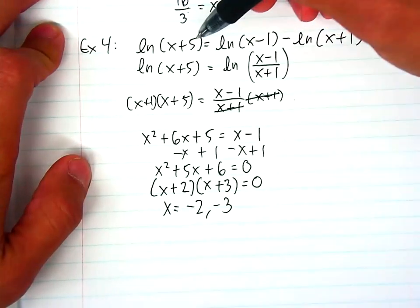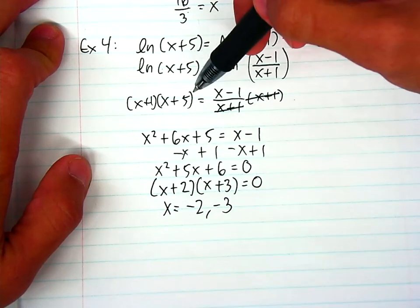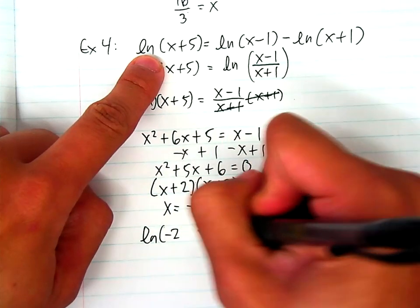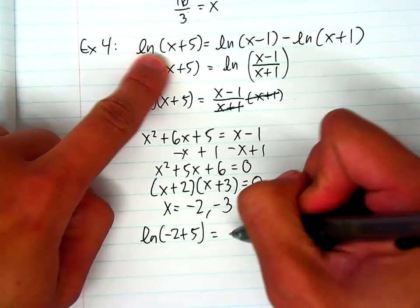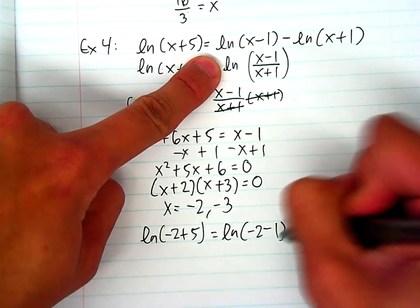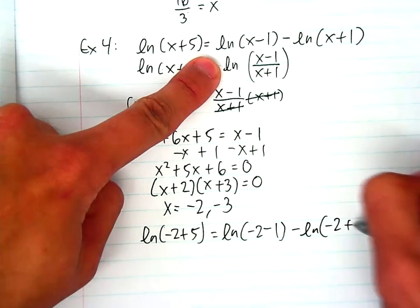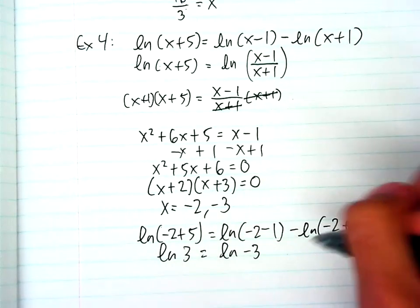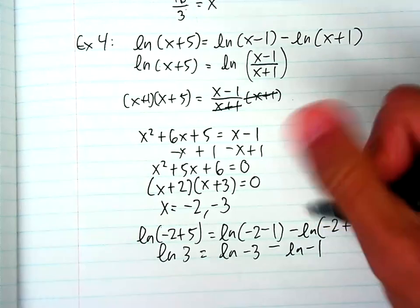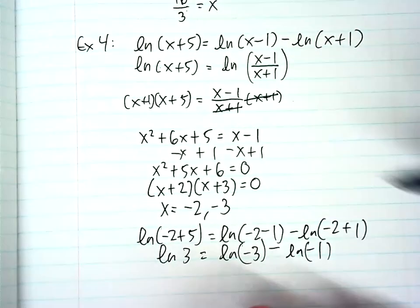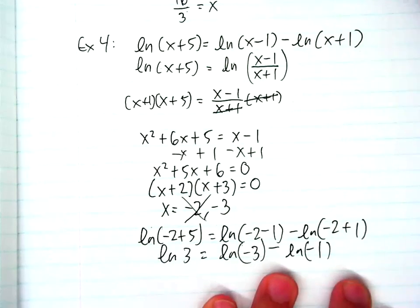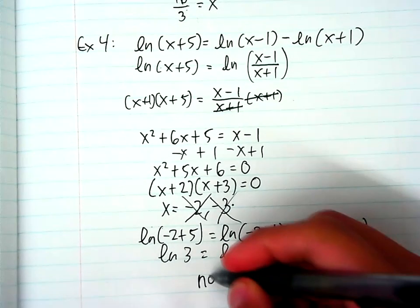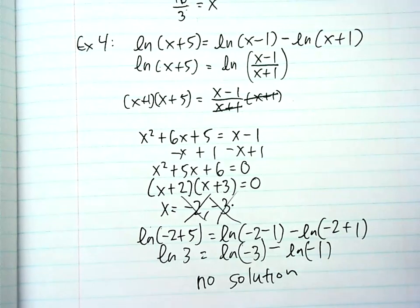And again, I still want to plug it in just into the original equation to make sure that I don't get any extraneous solutions. So if I plug in negative 2 in here, I will get the natural log of negative 2 plus 5 equals the natural log of negative 2 minus 1 minus the natural log of negative 2 plus 1. So if you look, I'm taking the natural log of negative numbers, so negative 2 is actually extraneous. And you'll notice if I plug in negative 3, I actually end up with negative logs again, so they'll be extraneous as well. So therefore, again, it's no solution.